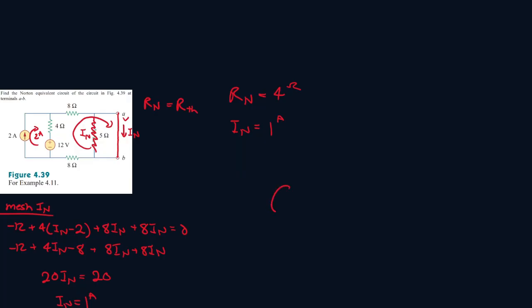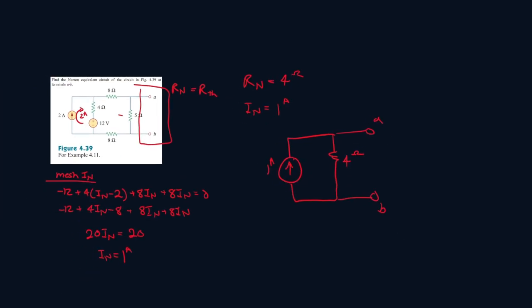So what it looks like is the current which is 1 amp, then there's a resistor here and this resistor is 4 ohms. And then we write this portion of the circuit over here. So this one will be A and this one will be B, and this is your Norton circuit.